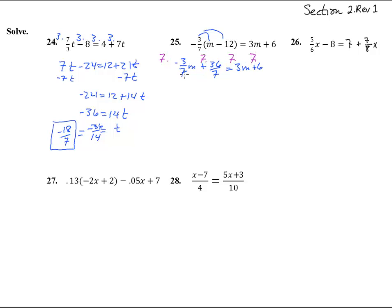On both sides of the equation, we get negative 3m plus 36 equals 7 times 3 is 21m plus 42. Let's get those m's together, looks like it'll be nice to get rid of this one. Add 3m on this side and add 3m on that side, we get 36 equals 24m plus 42.